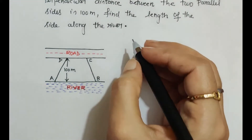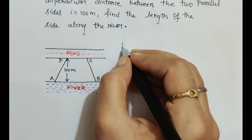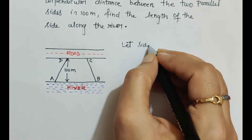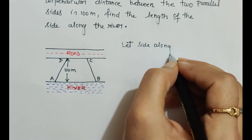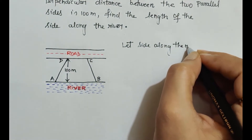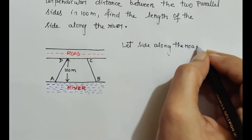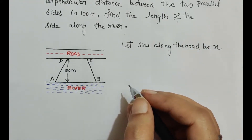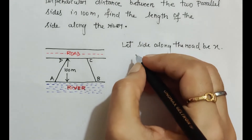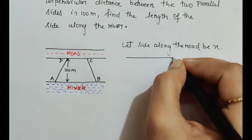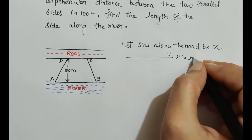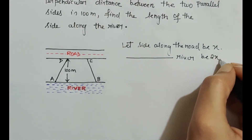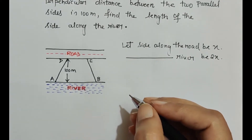Let the side along the road be x. Then the side along the river would be 2x.